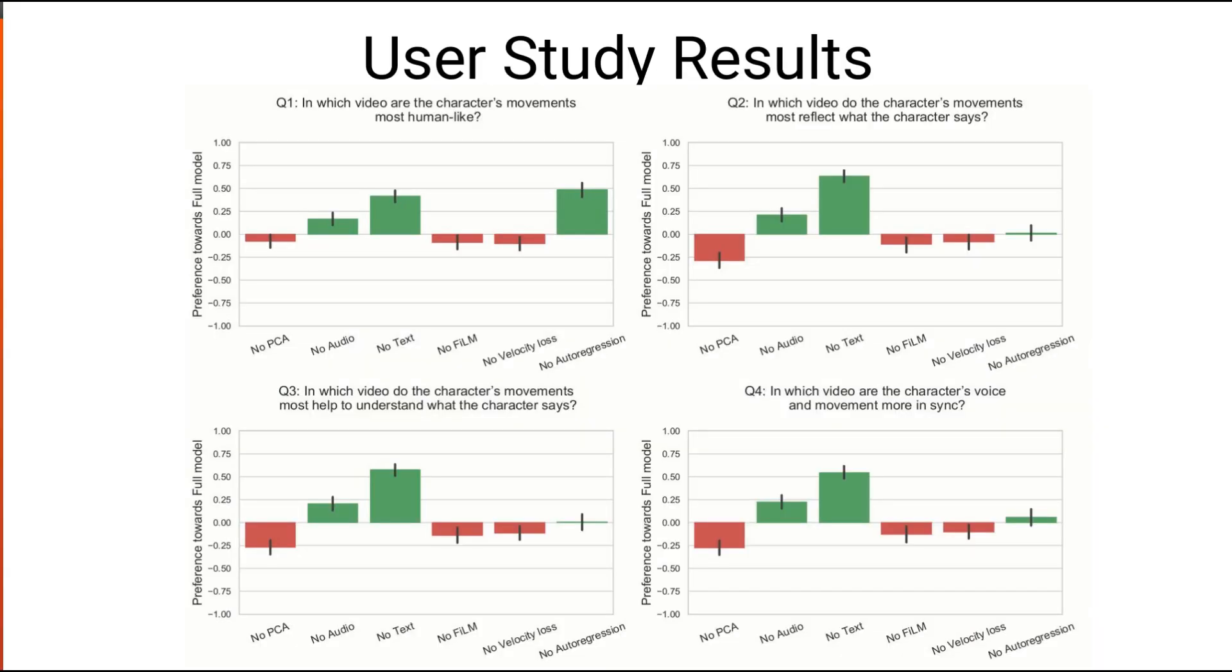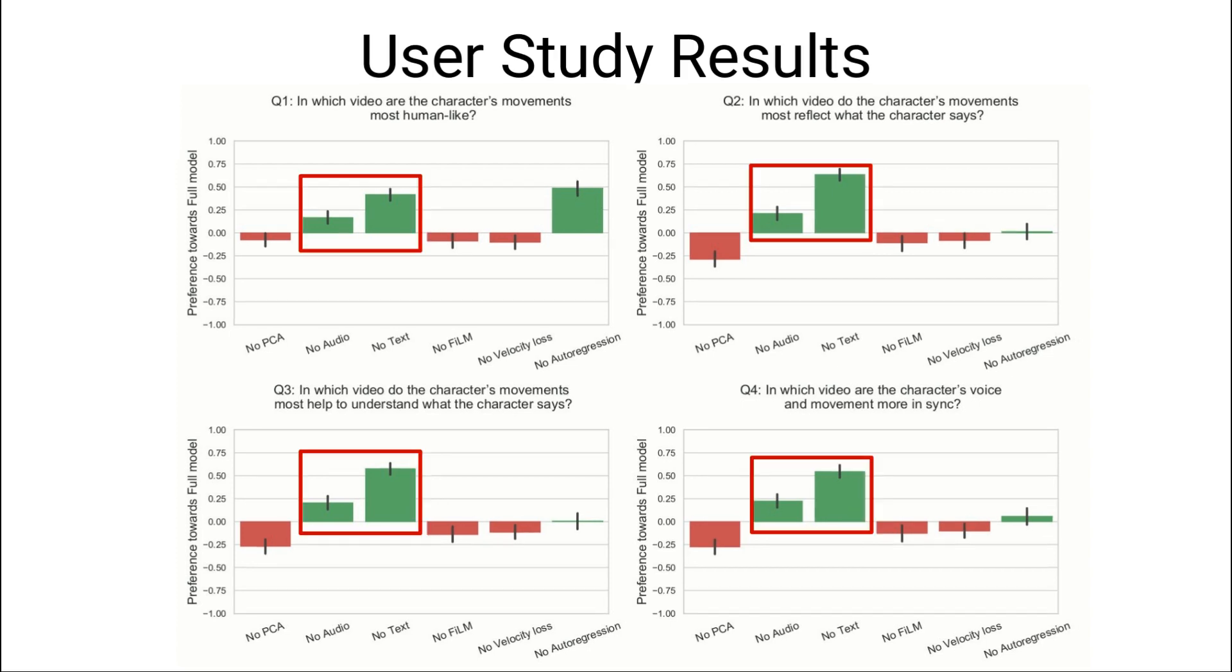The results of our user study agree with these observations. In these bar charts, positive values indicate a preference for the full model over the ablation labeled on the horizontal axis. On all four aspects we evaluated, participants strongly preferred the full model over ablations that used only one input modality, either text or audio. This shows that both modalities can help make gestures more human-like and match text content better.